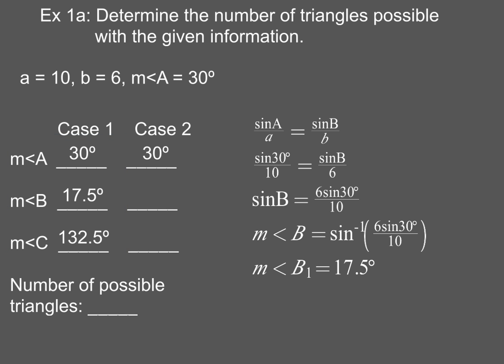But now here's the other piece that I've got to do. I've got to take a look at another possibility for the measure of angle B. And to do that, I'm going to find the supplement to the angle that I just found for angle B. So I end up with 162.5 degrees for my other possibility for the measure of angle B. Now, so when I analyze case two and I add up the 30 degrees and 162.5 degrees, that's already more than 180 degrees.